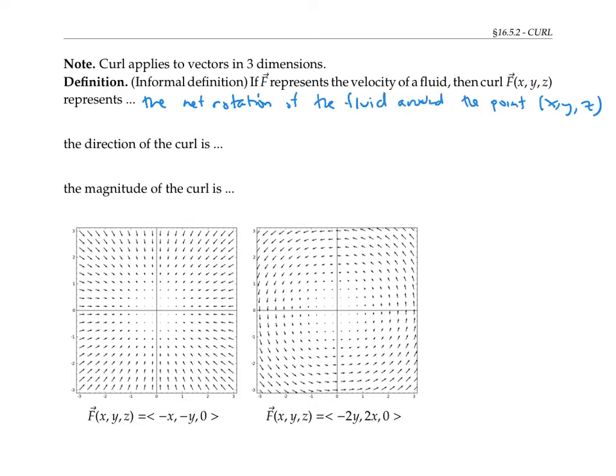Curl is a vector, and the direction of the curl vector is the axis of rotation, as given by the right hand rule. The magnitude of the curl can be thought of as the speed of the rotation.